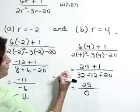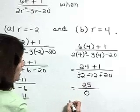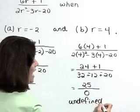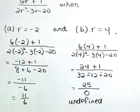So if we evaluate the rational expression at r equal to 4, then we get an undefined outcome because division by 0 is undefined.